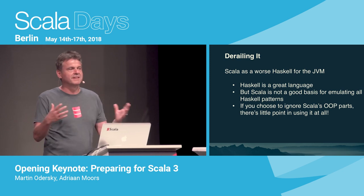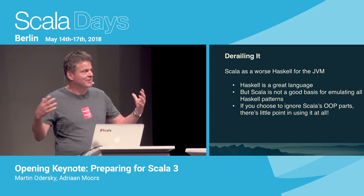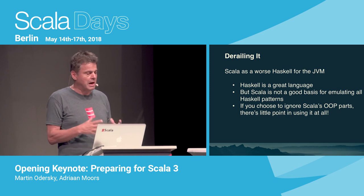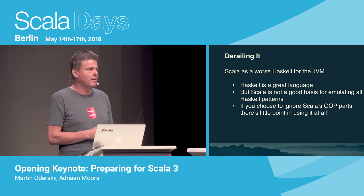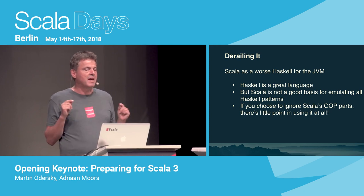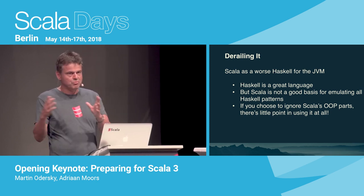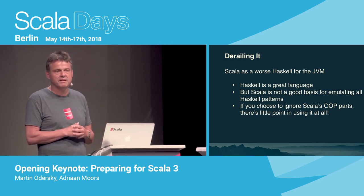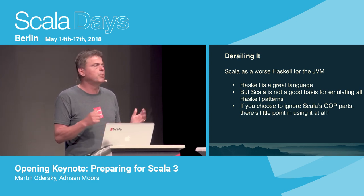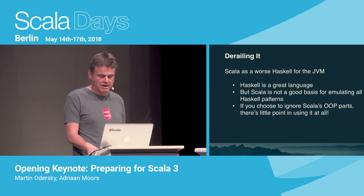On the functional side, there was the name 'Haskellator,' coined by my former student Sandro Stucky — Scala as the elevator towards Haskell. For quite a few people, that's actually been true, which I don't think is bad at all. Haskell is a great programming language. But Scala is not a very good basis for emulating all of Haskell's patterns — it lacks certain things. If you choose to ignore Scala's object-oriented parts, there's little point in using it at all. Why not use Haskell or one of the Haskell versions on the JVM?